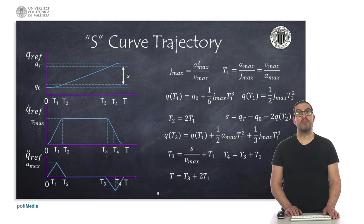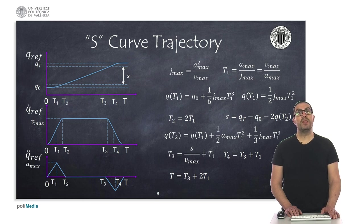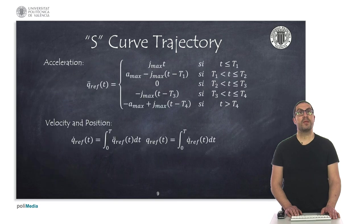Therefore, the actual displacement during the time instances t2 and t3, where the speed is kept constant, can also be known. This implies that we can also compute the time instance t3, and using symmetry relations, we can also compute time instances t4 and t. Again, once we know the switching time instances, we will be able to compute the acceleration, velocity, and position profiles in a closed-form expression.